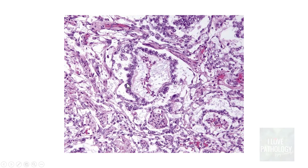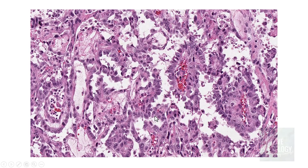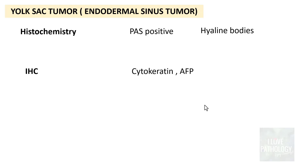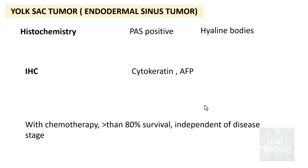On histopathological examination of a yolk sac tumor, a Schiller-Duval body shows a thin-walled capillary with RBCs inside, the papillary lined by tumor cells within a cystic space — these are very classical of yolk sac tumors or endodermal sinus tumors. Histochemically, these tumors are also PAS positive — particularly the hyaline bodies (it is the hyaline bodies that are PAS positive, unlike dysgerminoma where the cells are PAS positive). Immunohistochemically, they stain for cytokeratin and alpha-fetoprotein. With chemotherapy and surgery, more than 50% survival is achieved, irrespective of the disease stage.